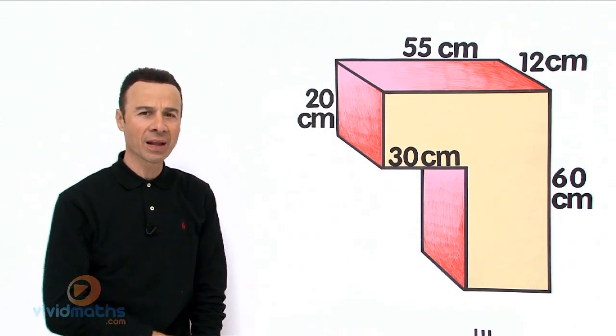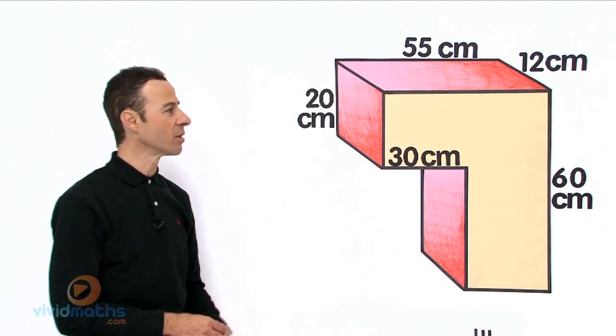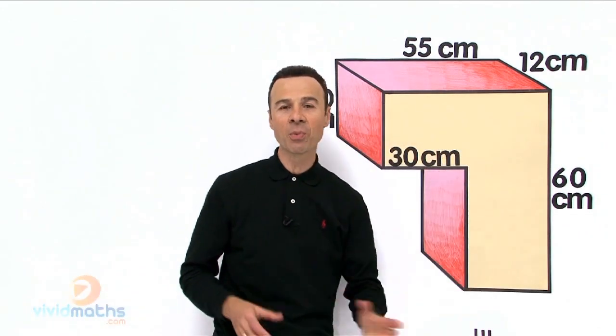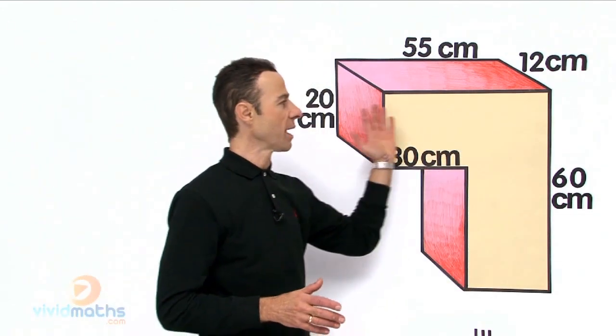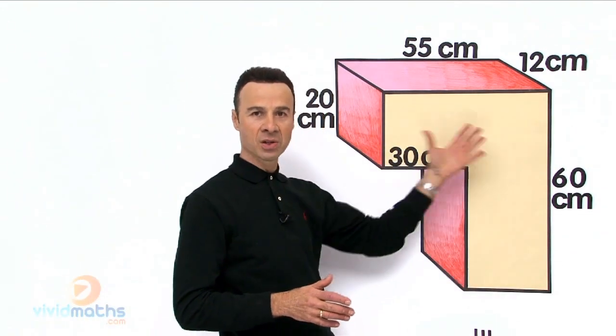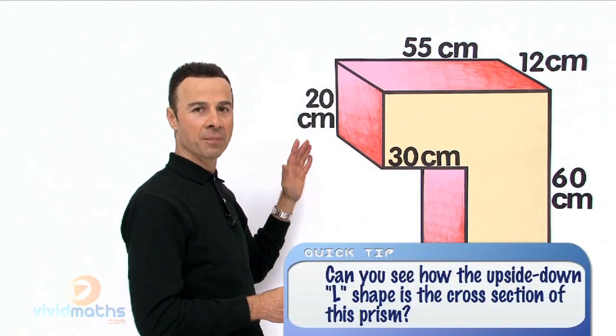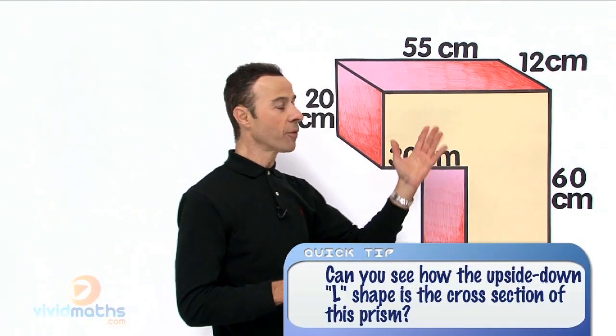But before we find that missing length, what we need to do is establish how we are going to find the area of the face, because if you remember with volumes, first we find the area of the face, see this one in beige, times it by the depth.